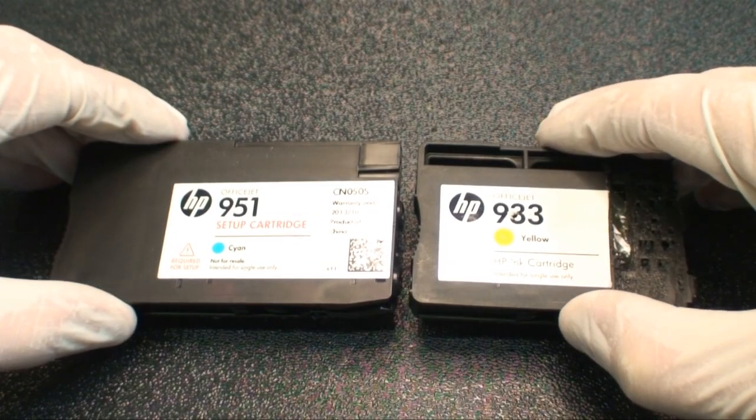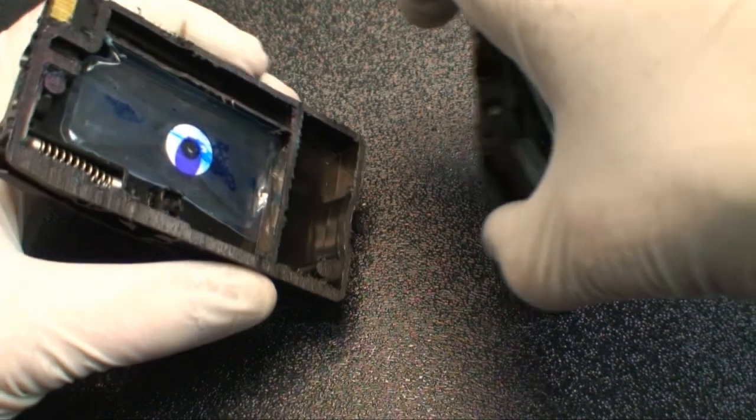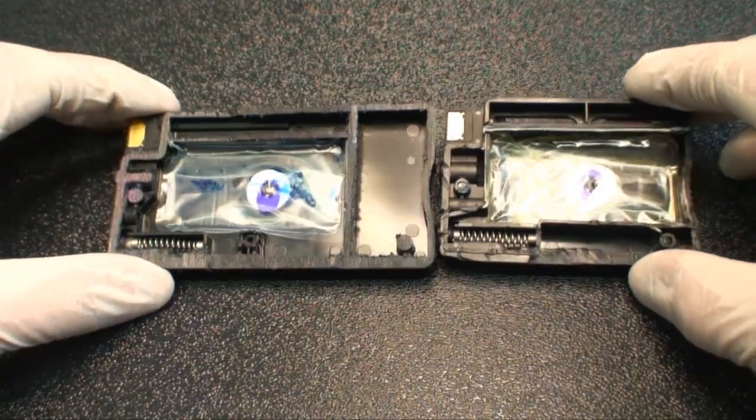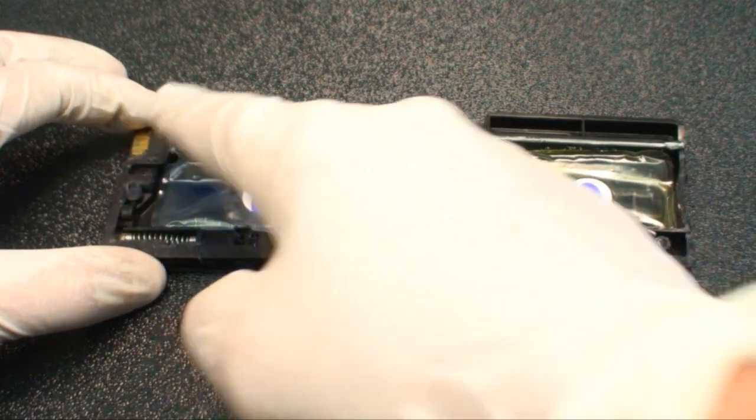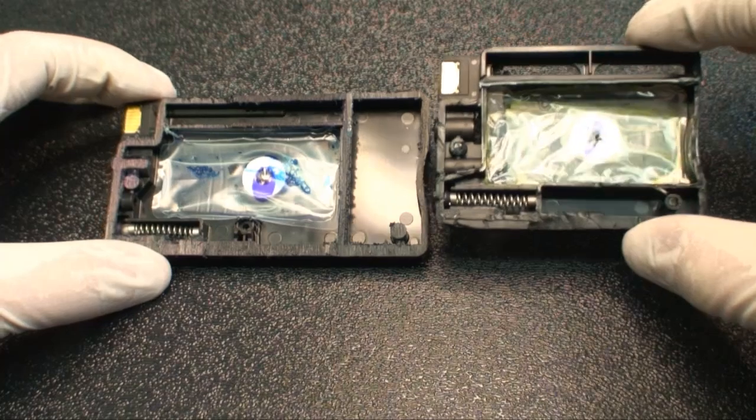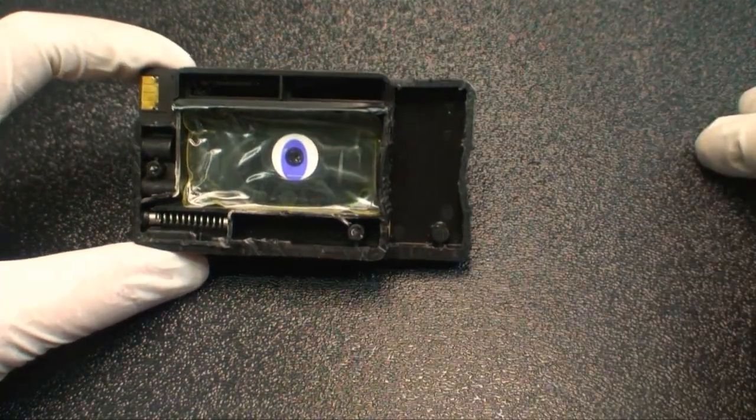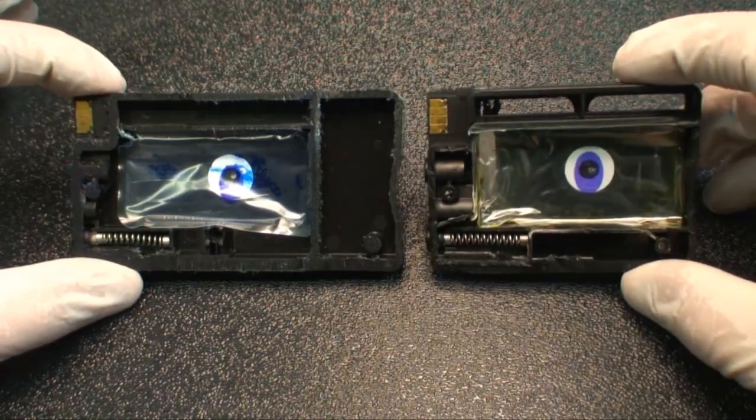The HP 950, 951, and 932, 933 cartridges are almost identical. They both have the internal air bladder, and the exit port and chips are in the same location. When the 932, 933 is laid on top of the 950, 951, you can see that the cartridges are the same functionally, but the 932, 933 cartridges are just shorter and hold less ink.